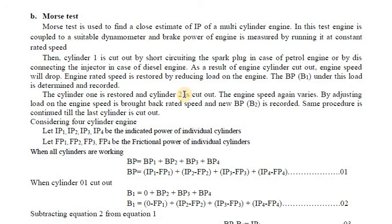You cut off one cylinder — making it inactive so it produces no power. For an SI engine, short-circuit the spark plug; for a CI/diesel engine, stop the injector. As a result, the engine speed drops. If all four cylinders were producing 2000 RPM, cutting one cylinder reduces the speed. The rated engine speed is then restored by reducing the load on the engine.